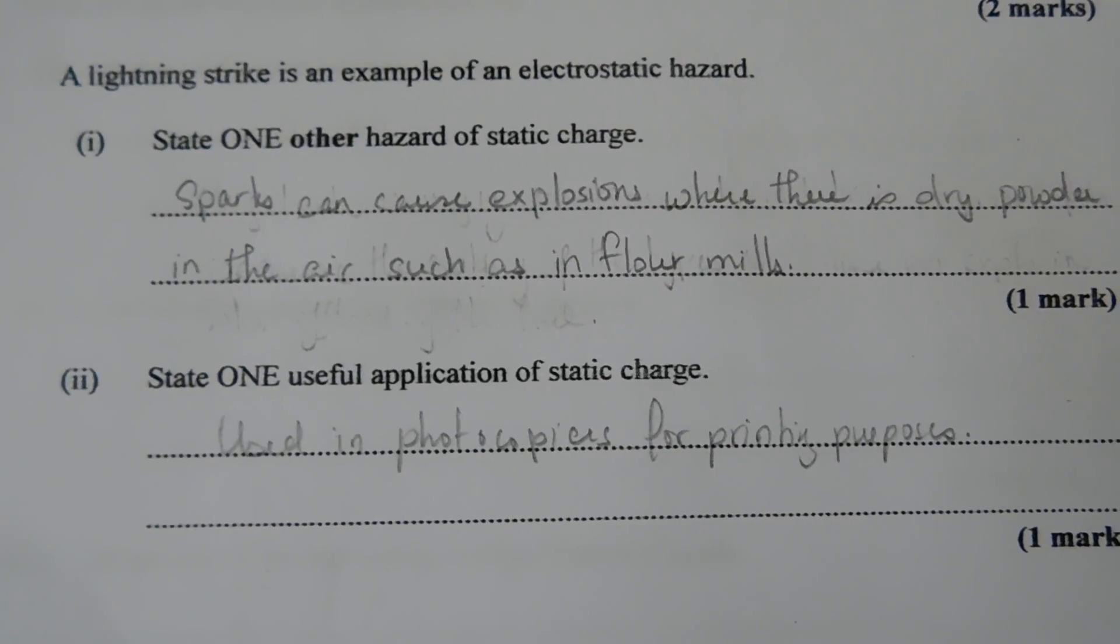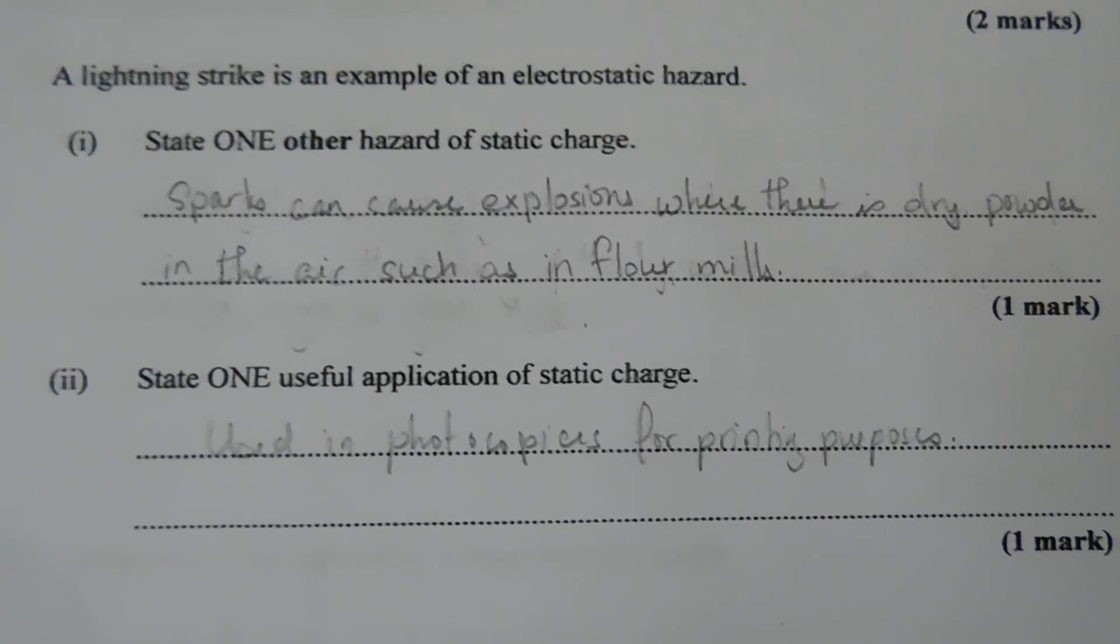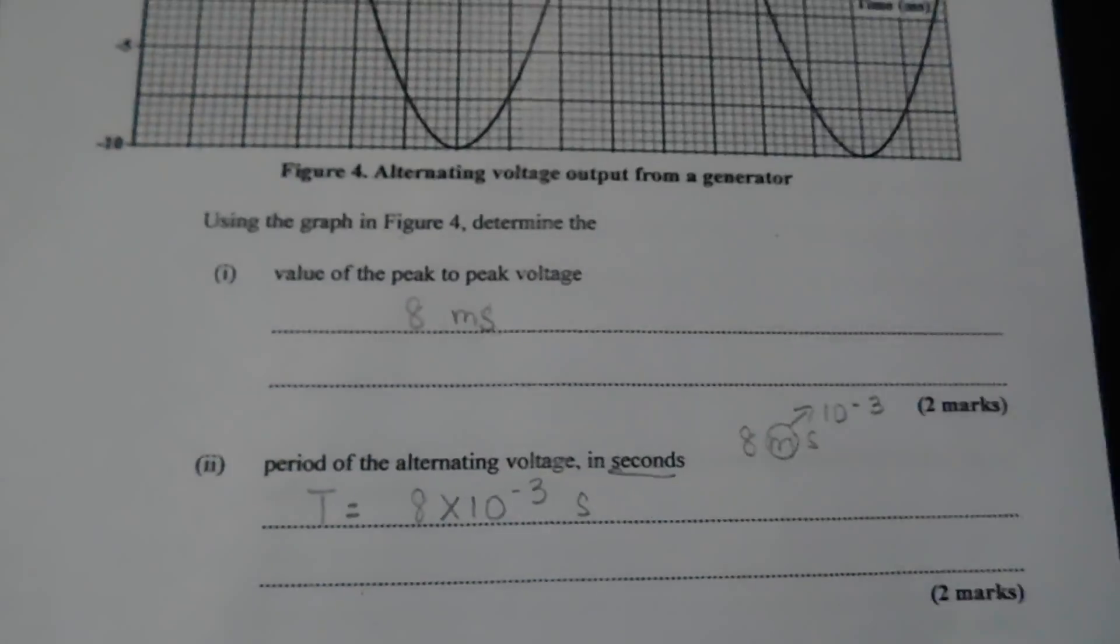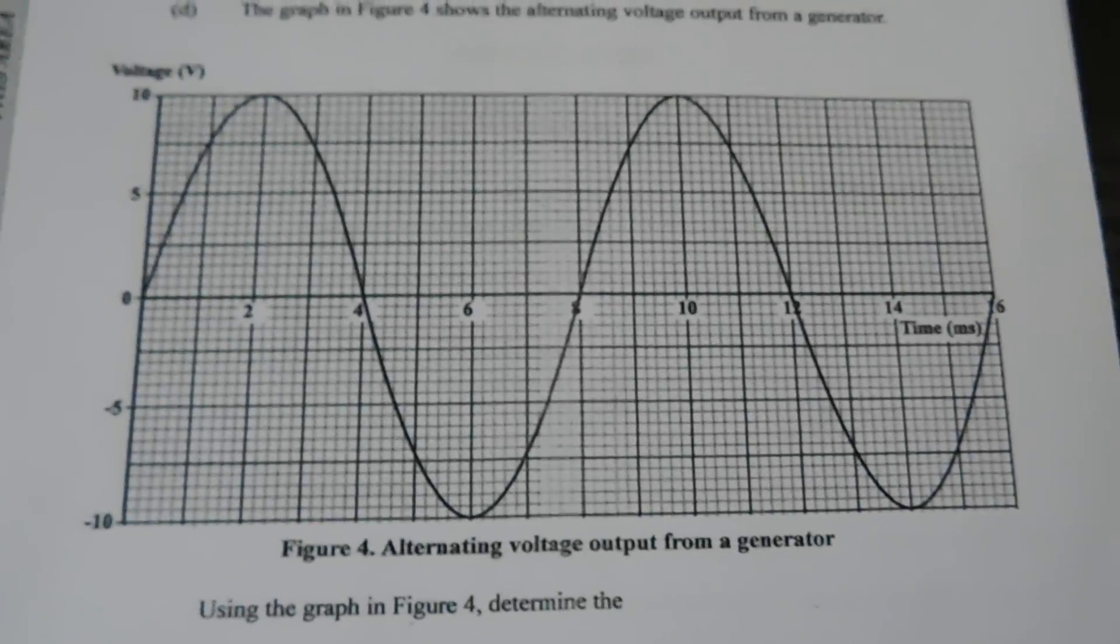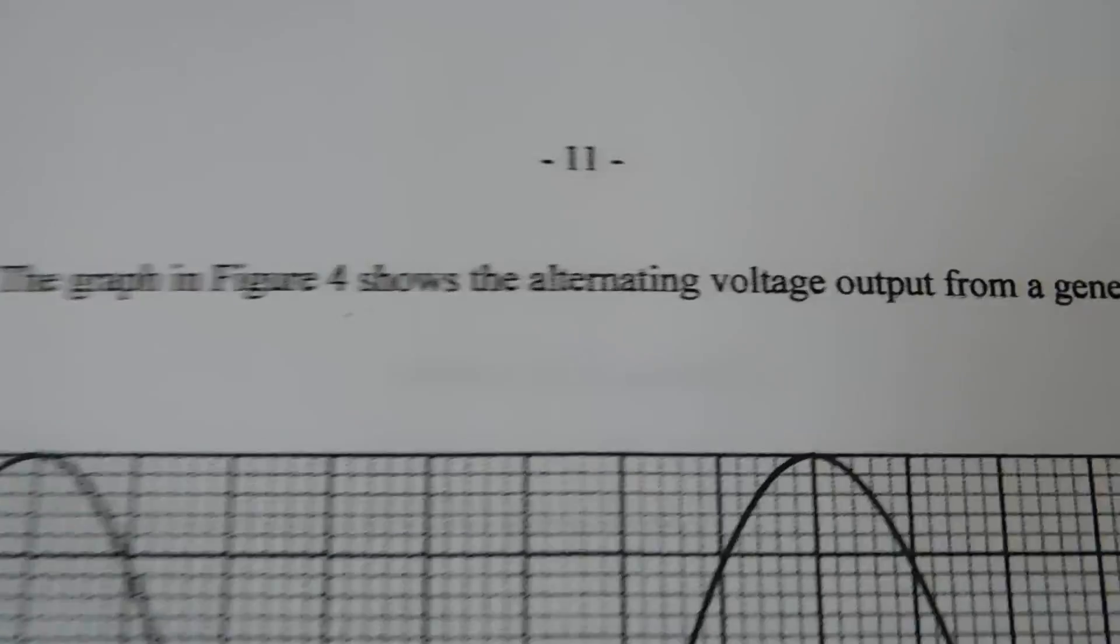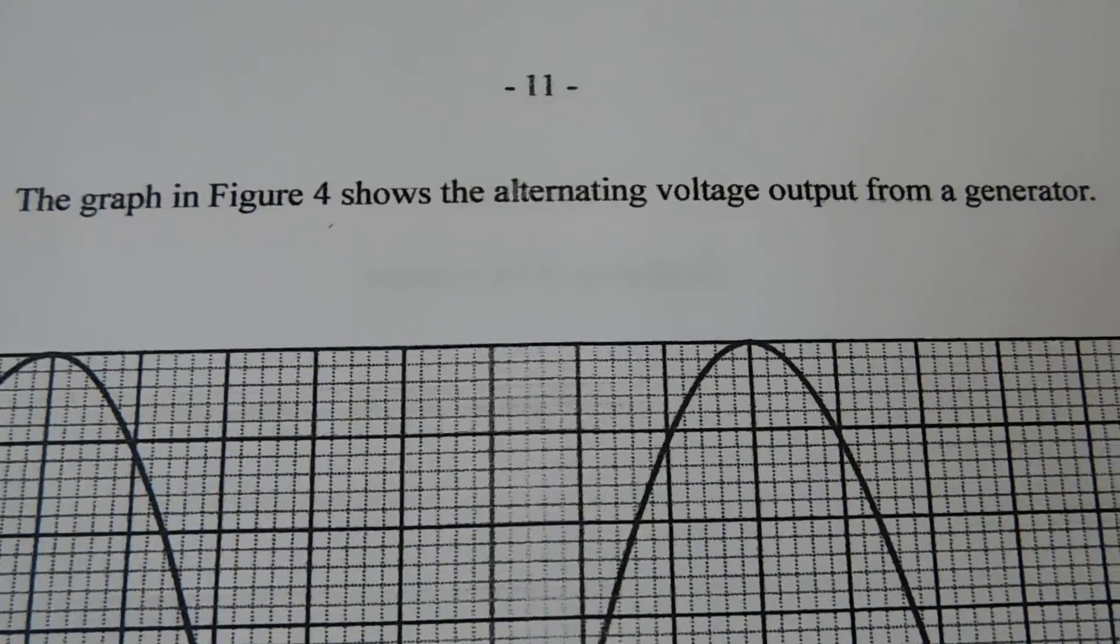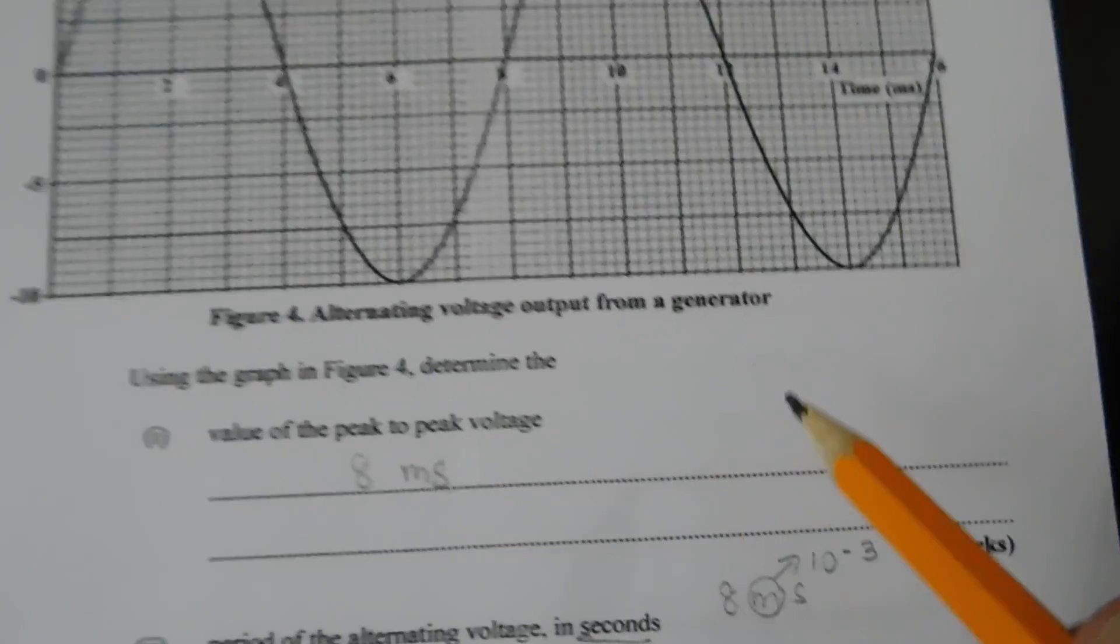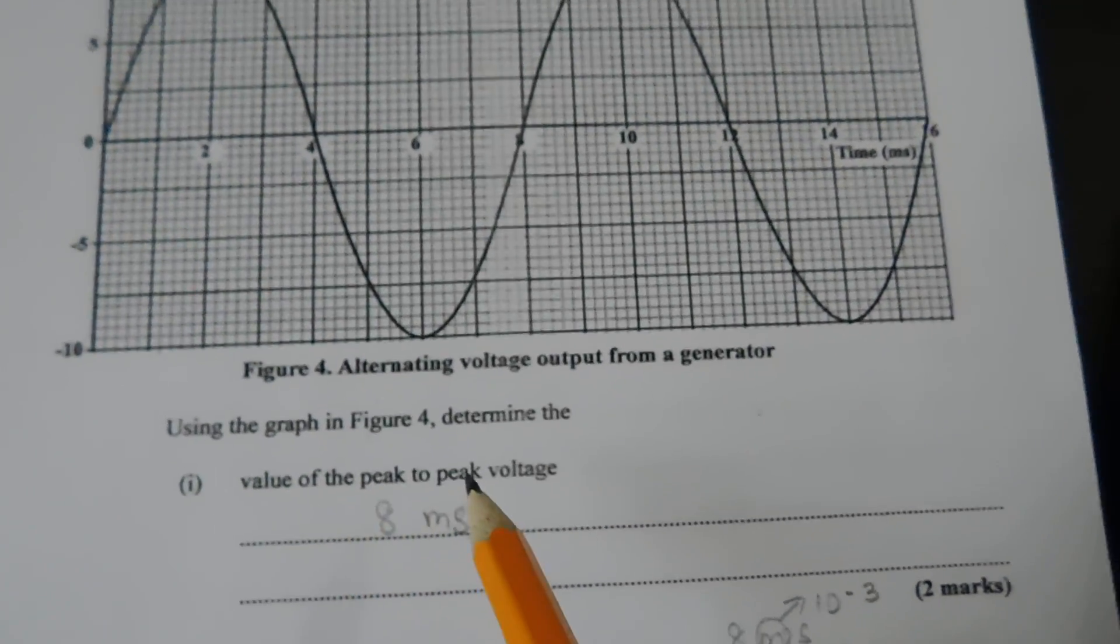State one useful application of static charge. They're using photocopiers for printing purposes. So that's that for this page. Then we had a voltage time graph, a sine wave. And it says, the graph in figure 4 shows alternating voltage output from a generator. And here we have it. So it says, using the graph in figure 4, determine the value of the peak-to-peak voltage.